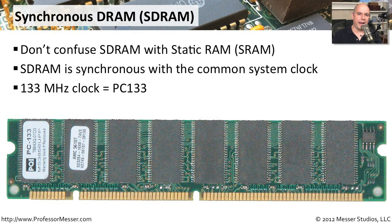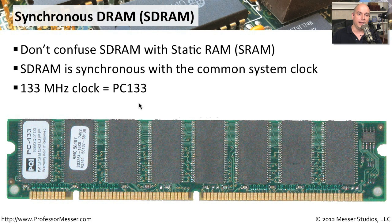We don't see SDRAM on a lot of modern systems — generally we see DDR type memory. But if you need to replace SDRAM in one of your computers, SDRAM is labeled with the same speed as your memory clock bus. So if you have a memory clock bus of 133 MHz, you're looking for SDRAM labeled PC133. Sometimes the memory itself has PC133 listed on it, so you know it's designed for a memory clock bus rate of 133 MHz.